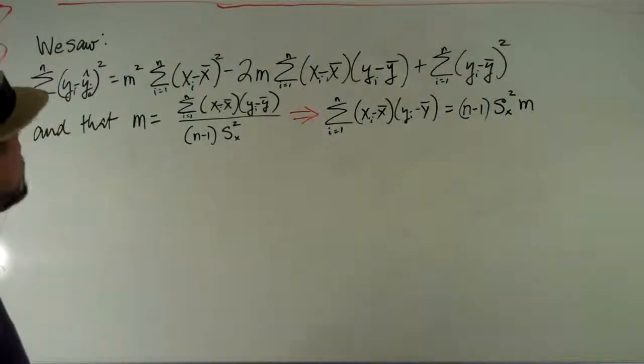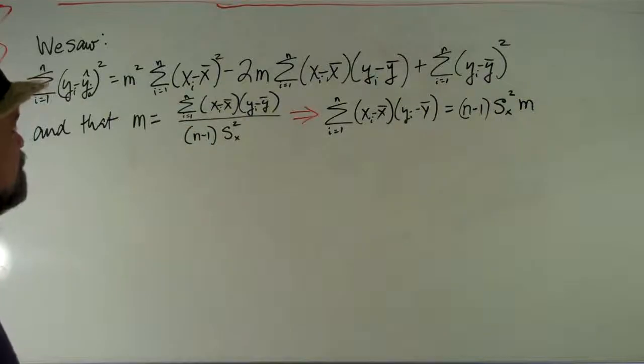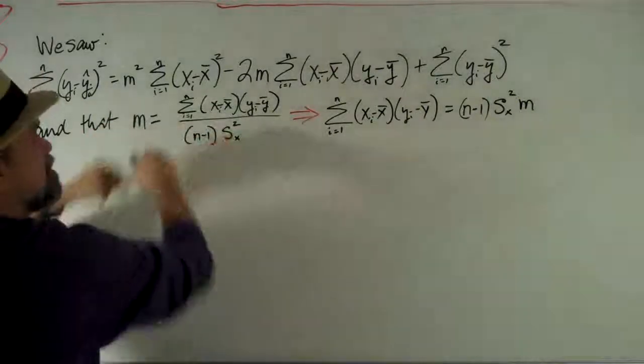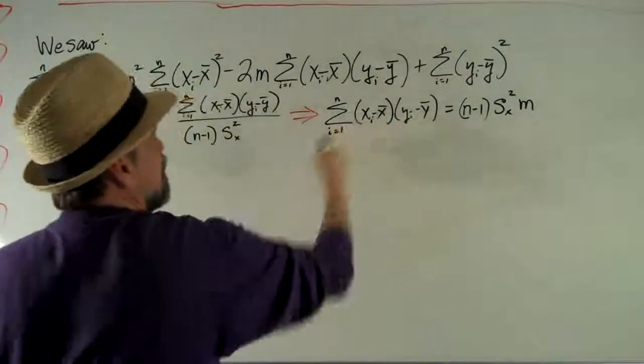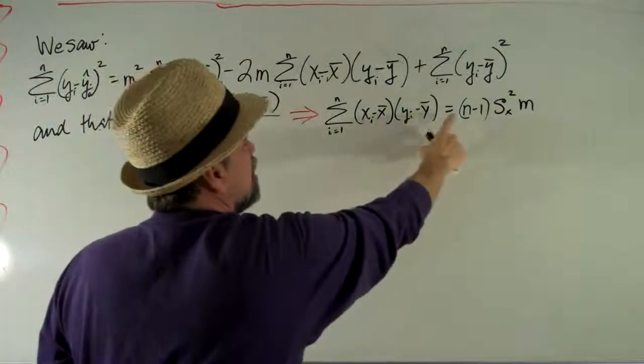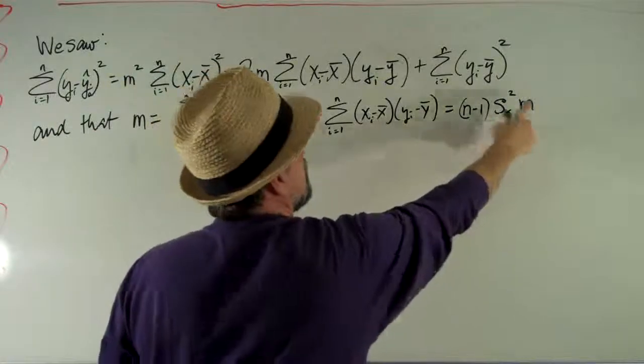We also found that m equals that thing. Well, if you take this and just multiply both sides by the denominator, what you get is that this sum of x minus x bar times y minus y bar equals n minus 1 times the variance of x times m.